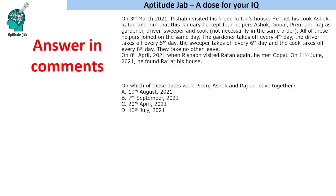Those are the answers to all the questions. Now I have a question for you to answer in the comments: on which of these dates were Prem, Ashok, and Raj on leave together? Find the day number for all the given dates and determine on which day all three of them were on leave together.